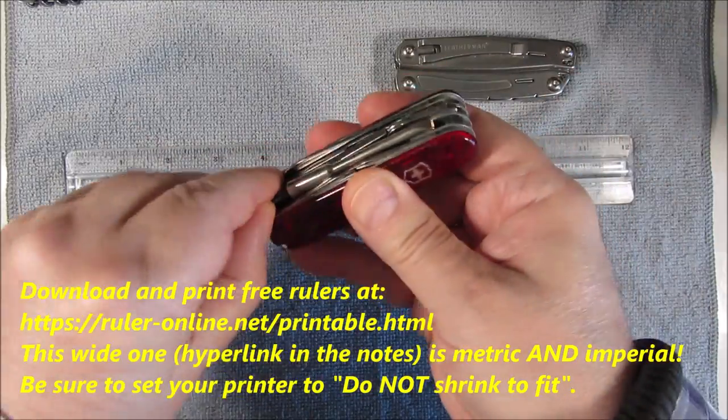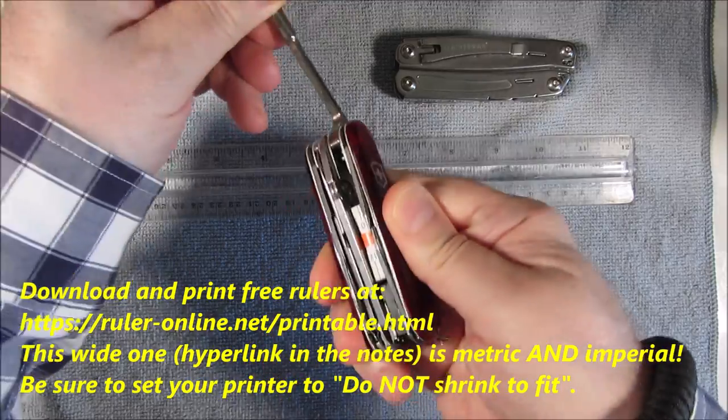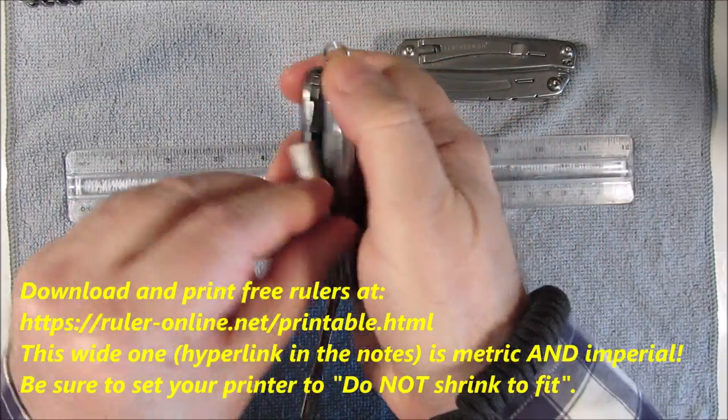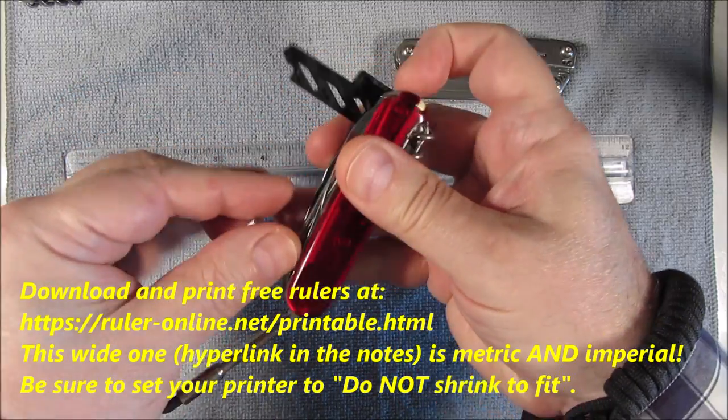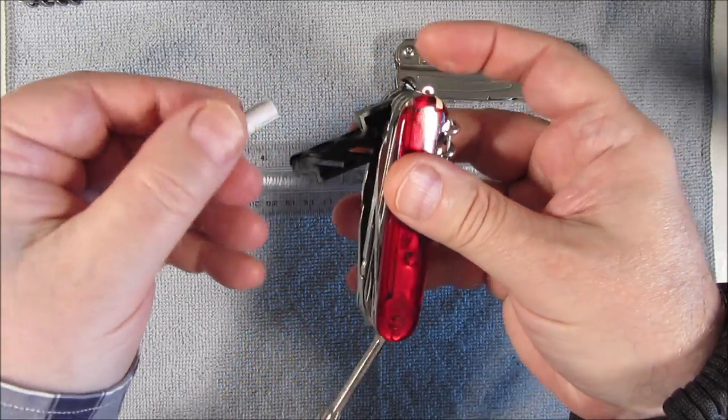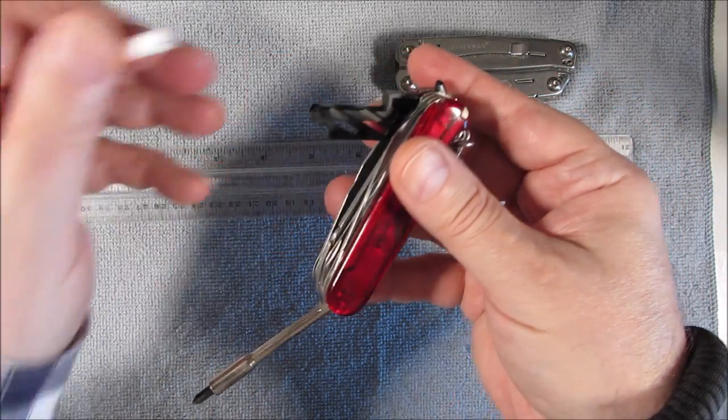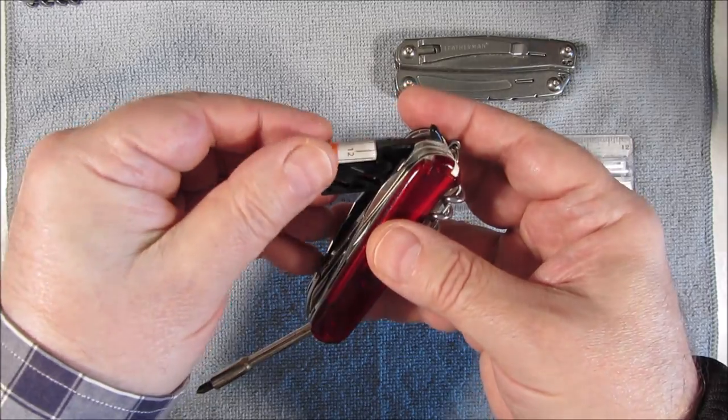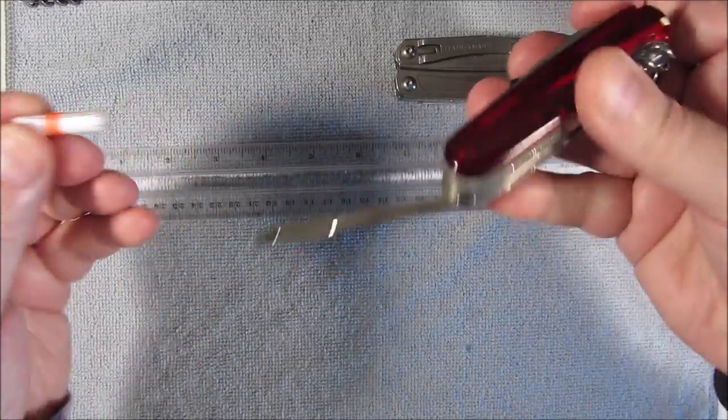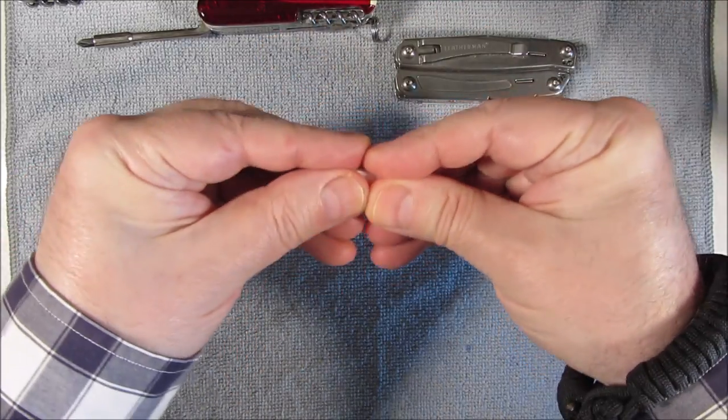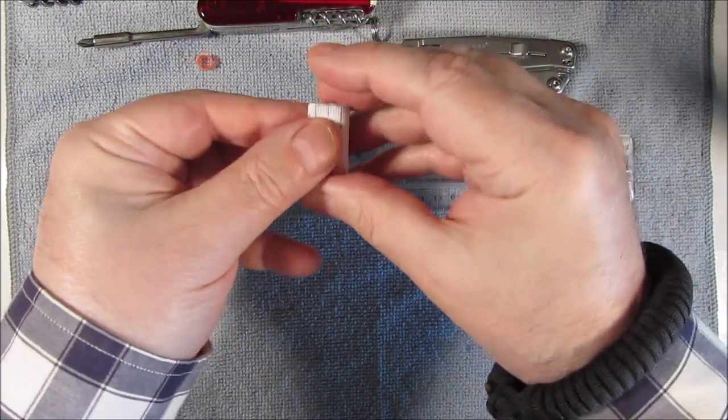Another method, here's another smaller Cybertool, is to carry it here, right next to the Cybertool bit kit. However, you have to remove the bits, so no one wants to do that. But here's a little teeny, one foot long ruler.